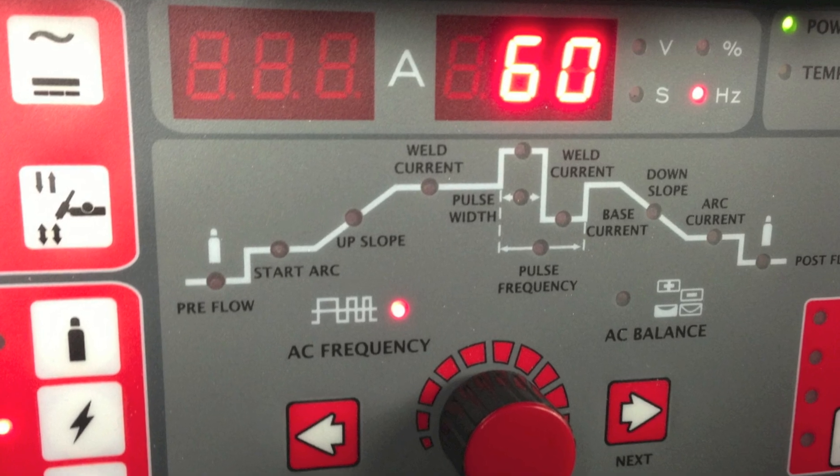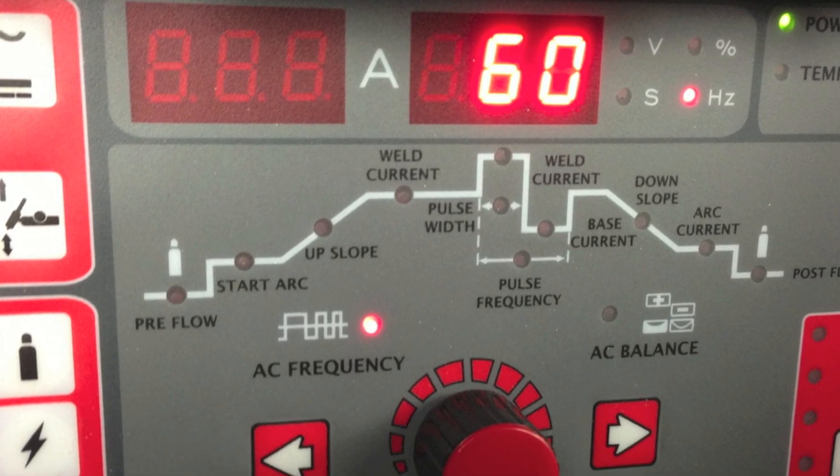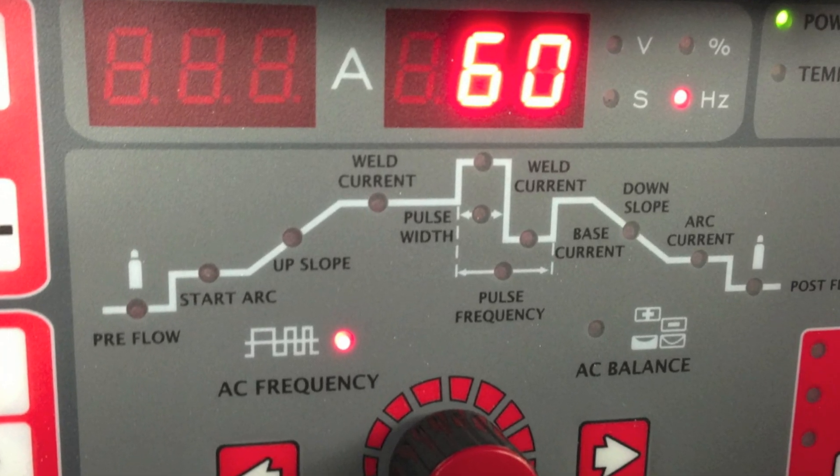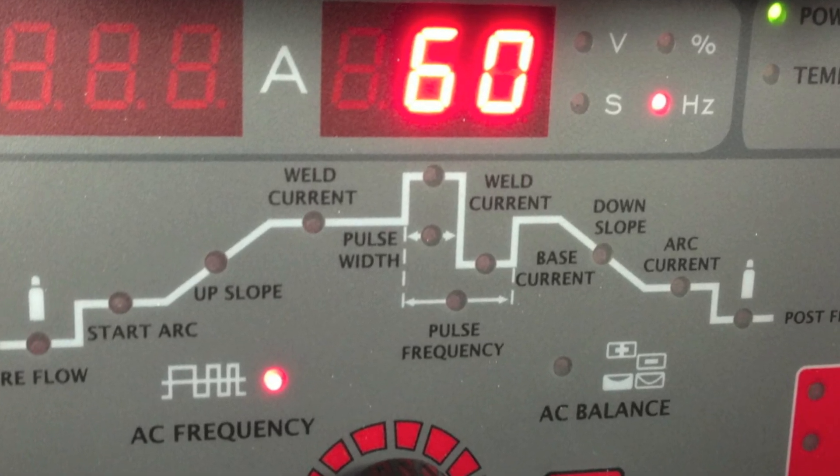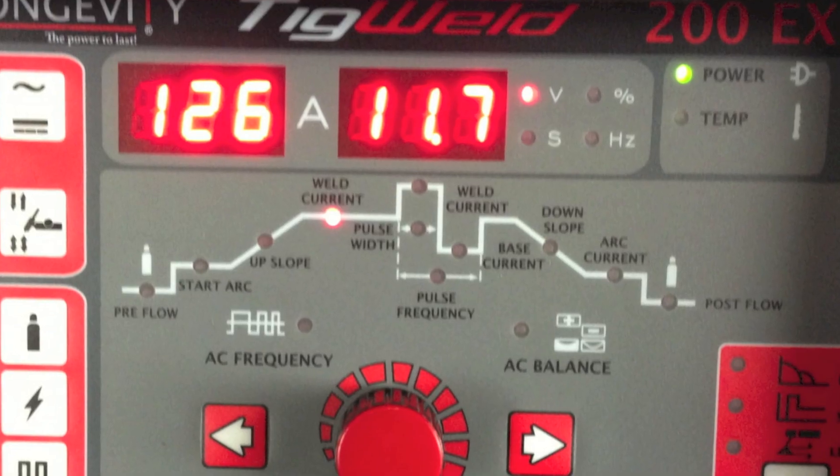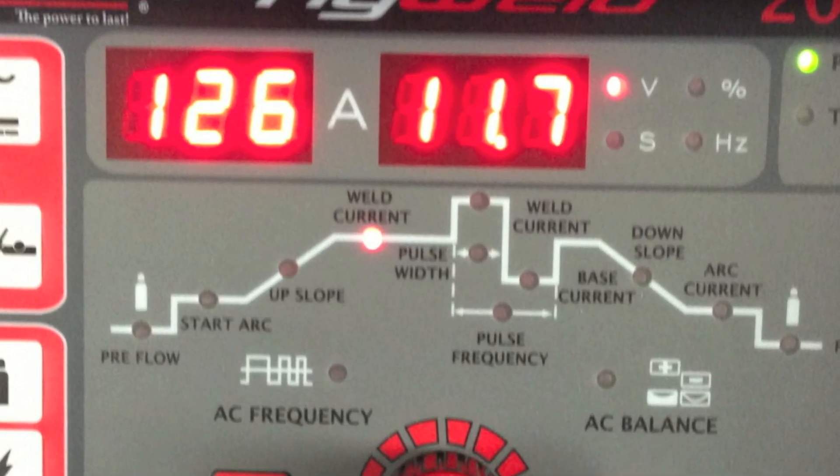I set the machine on AC and set the AC frequency to 60 hertz. For this video all pulsar settings were shut off on the machine and we are only working with the AC frequency. I set the amperage to about 125 amps.